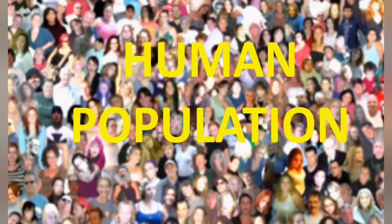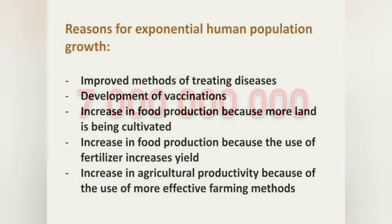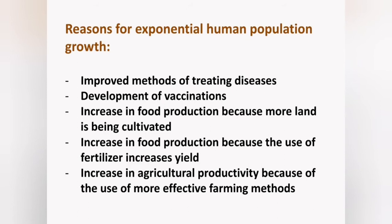When we consider the human population, we are not sure what growth form it will follow. Two years ago, the human population exceeded 7 billion. The reasons for this exponential growth include improved methods of treating diseases, the development of vaccinations, increased food production through more land being cultivated, use of fertilizers to increase crop yield, and more effective farming methods — all leading to rapid human population growth.